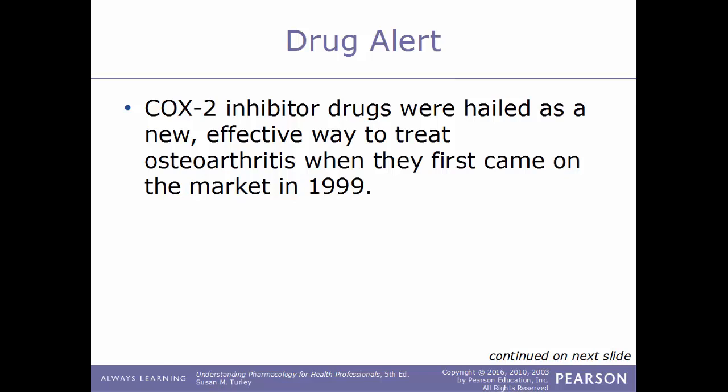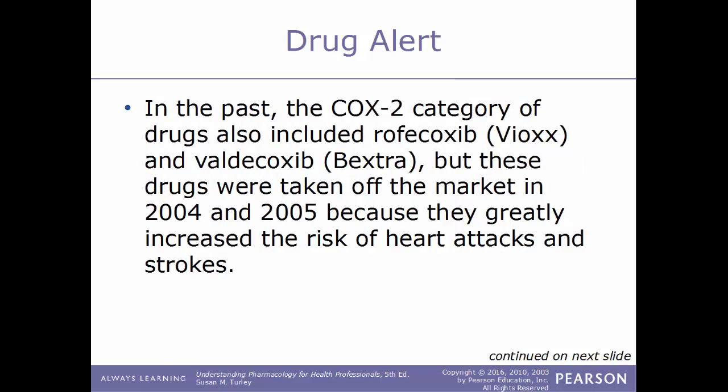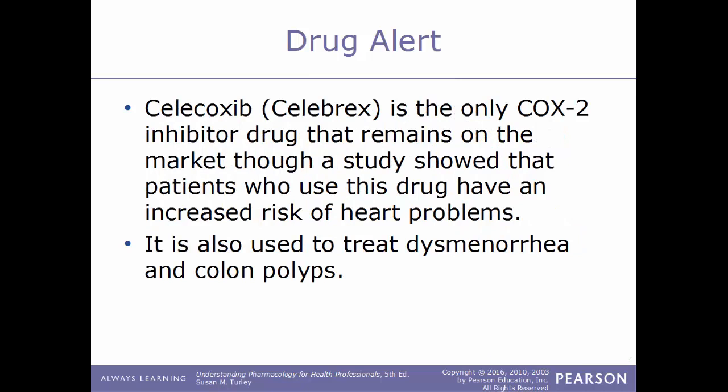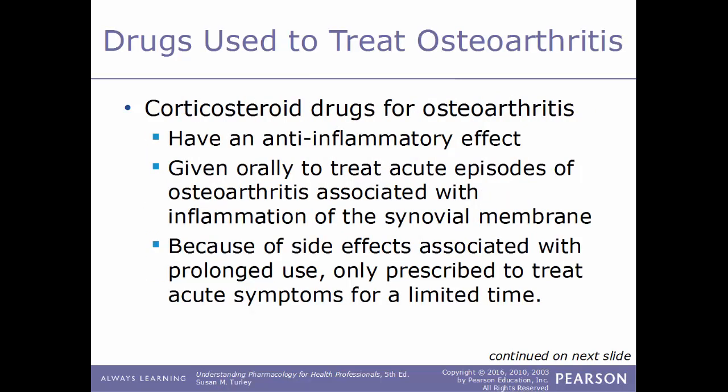Drug alert: COX-2 inhibitor drugs were hailed as a new effective way to treat osteoarthritis when they first came onto the market in 1999. The COX-2 category previously included Vioxx and Bextra, but these drugs were taken off the market in 2004 and 2005 because they greatly increased the risk of heart attacks and strokes. Celebrex is the only COX-2 inhibitor that remains on the market, though studies show it also carries an increased risk for heart problems. This drug is also used to treat colon polyps and dysmenorrhea.